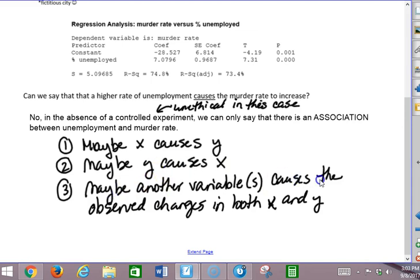Or maybe there's some other variable that causes the observed changes in both X and Y. So we don't know what's going on here that might have issues, poverty, maybe economy. Maybe there's some other things that are sort of underlying causes that are responsible for both.